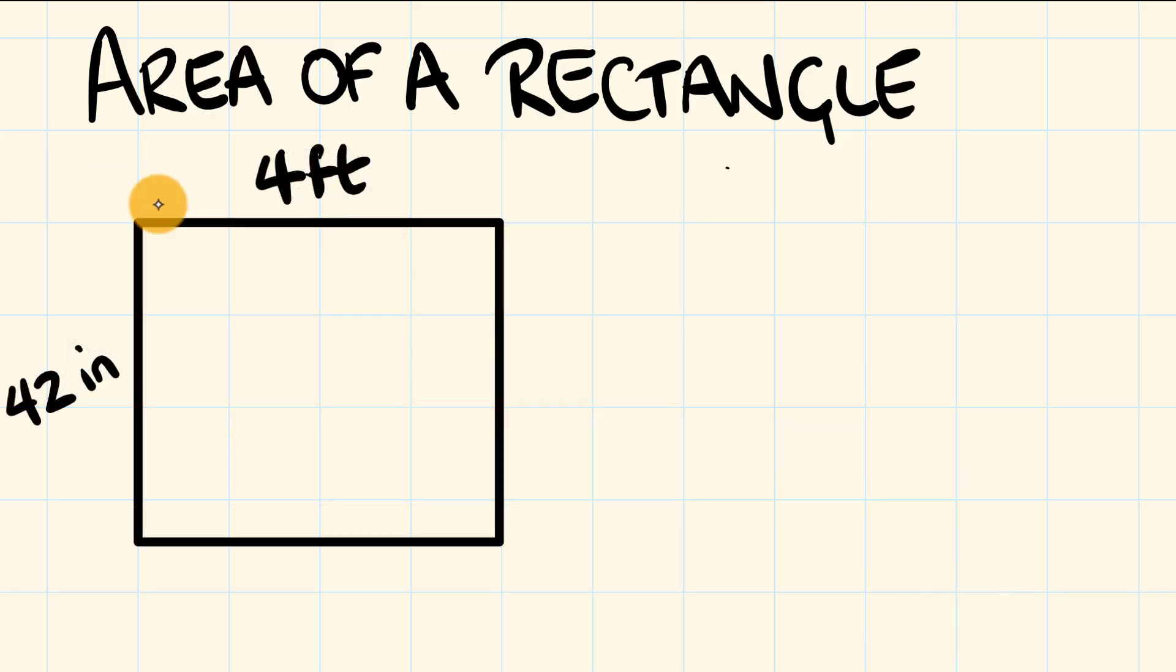So here we have a rectangle which is 42 inches wide and four foot long. What you might notice here is the units are differing from one another. So before we work out this rectangle's area, we need to make both of these measurements into the same units. We're going to change the 42 inches into its feet equivalent.